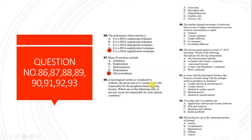Question 88: Students visualizing an astrological section see cells responsible for peripheral demyelinating disease. Which nervous system cells are responsible? Since this is peripheral demyelination, the cells responsible are Schwann cells. Deficiency of Schwann cells can cause peripheral demyelinating disease.